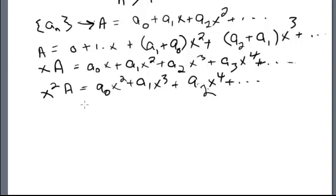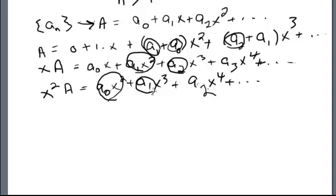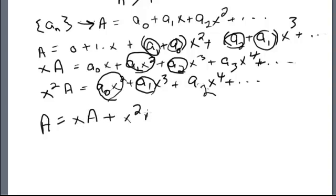Looking at these expressions, we can see the terms match up: the x A terms and the x² A terms reflect the recurrence. Putting it together, A equals x times A plus x² times A. The remaining constant term involves a₀ which equals zero, so we add x for the a₁ equals 1 initial condition.